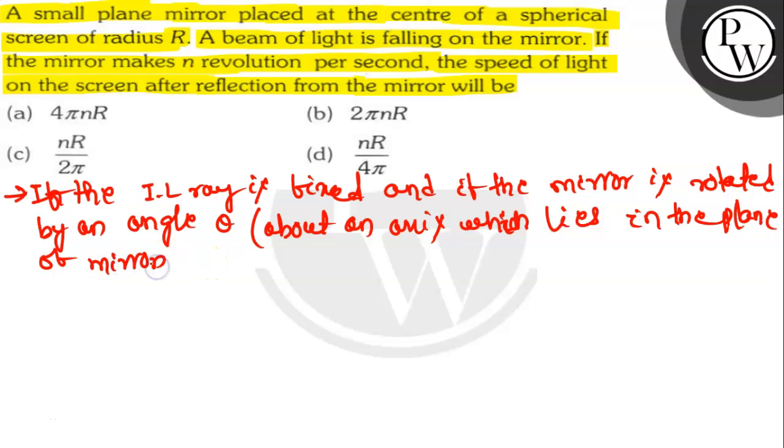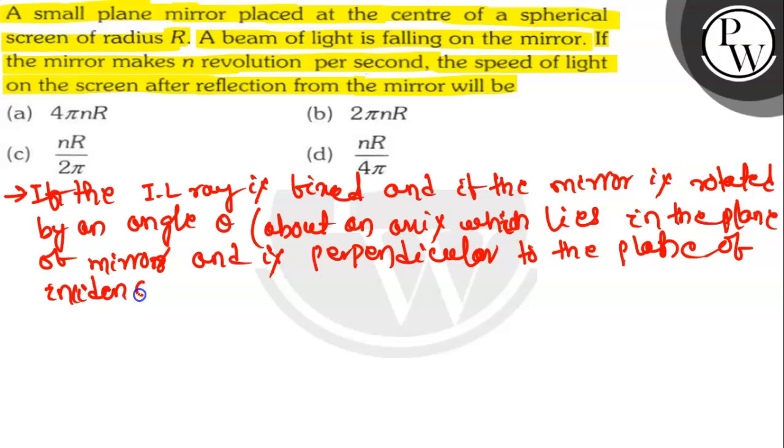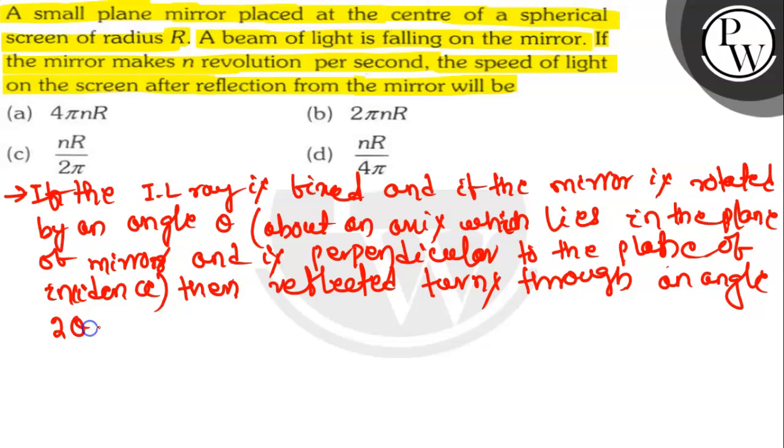and is perpendicular to the plane of incidence, then the reflected ray turns through an angle 2 theta.